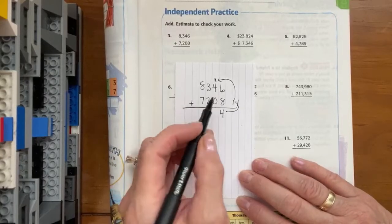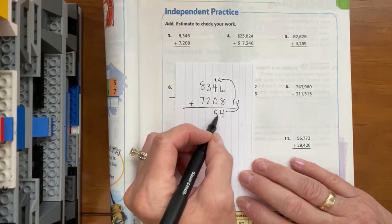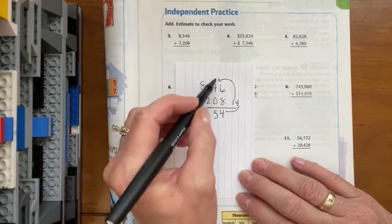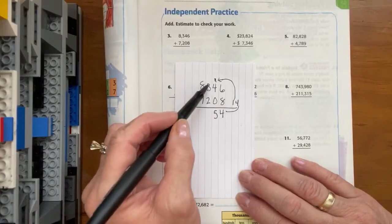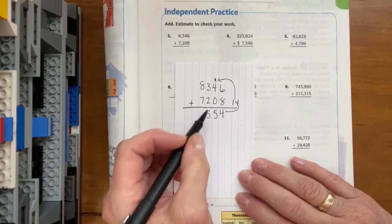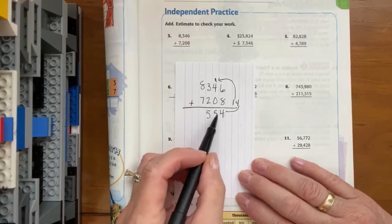Four tens plus one ten gives us five groups of ten. And we move on to the hundreds. Three hundreds plus two hundreds is five hundreds. That's why it's in the hundreds position. Ones, tens, hundreds.